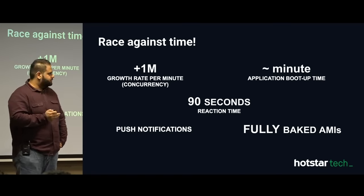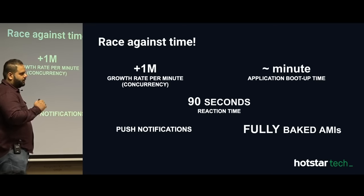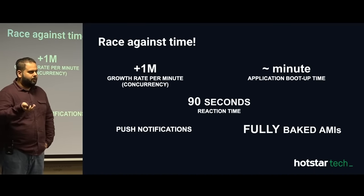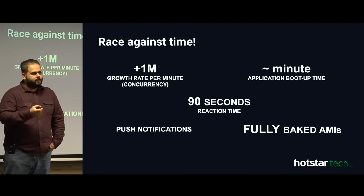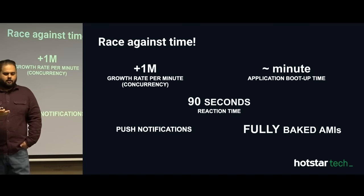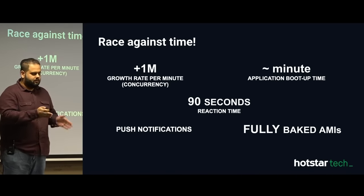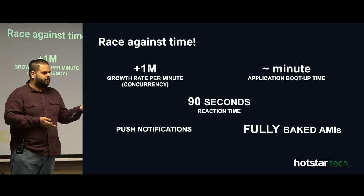What does scaling look like? The growth rate is 1 million per minute, so we have to scale up in advance. If I wait until concurrency is at 10 million before scaling, by the time an EC2 instance is provisioned, boots up, the application becomes healthy, and registers itself with the load balancer — five to six minutes are wasted. In a live match you cannot afford that, because in five to six minutes your traffic can increase by five or six million.